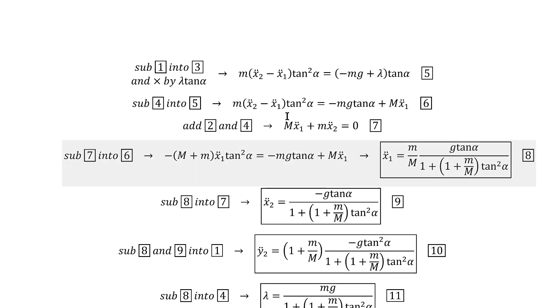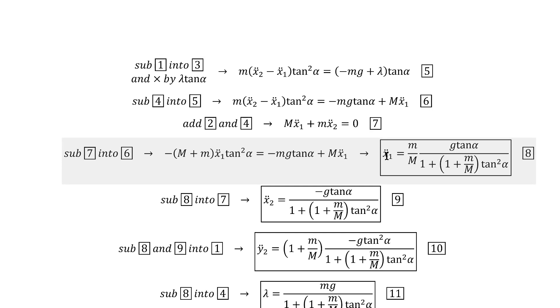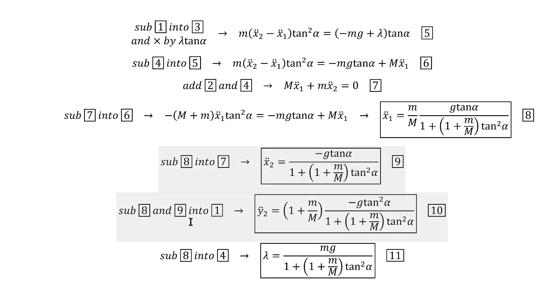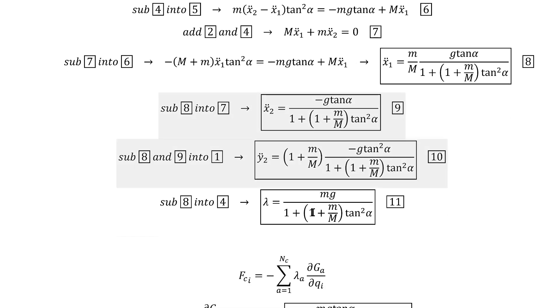It's a bit of a process, but it's pretty easy to do. If you substitute one into three and then multiply by lambda tangent alpha, you arrive at this equation. You can then substitute four in to rewrite this term right here like this, and you can also add two to four in order to get this equation, which we'll call seven. Then you can substitute seven into this equation we got with the previous manipulations to solve for x1 double dot here. You can then substitute that back into equation seven to get x2 double dot, and then you can substitute both eight and nine into one to get y double dot. We'll need those later.